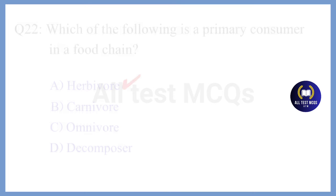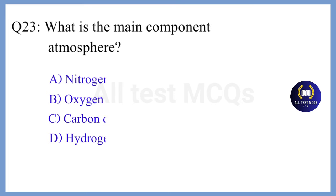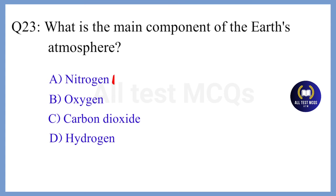Question 23. What is the main component of the earth's atmosphere? The correct answer is Option A. Nitrogen.